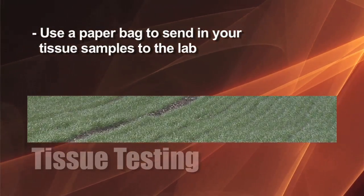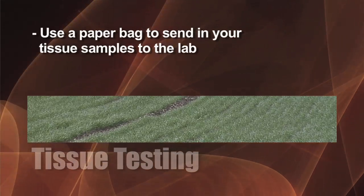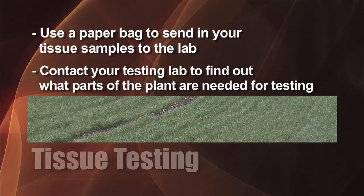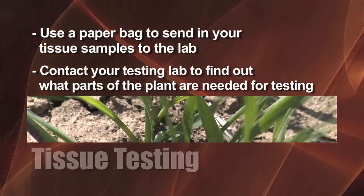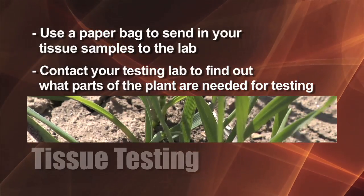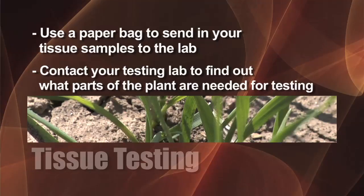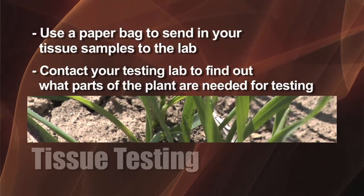We strongly encourage you to use a paper bag when sending samples in. You can call the testing lab and have them send you some sample bags. You can also go to our website or talk to your testing lab to find out what you need for each sample — for example, at a very early growth stage you may need the whole plant, while at a later stage you may need a particular leaf. Just make sure you're doing the sampling correctly.